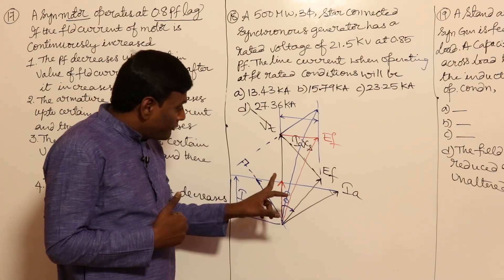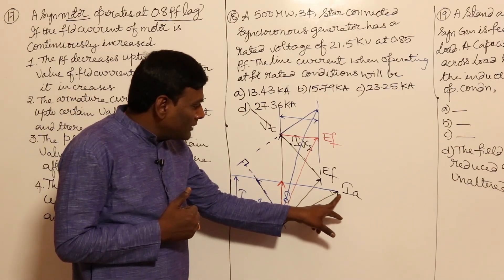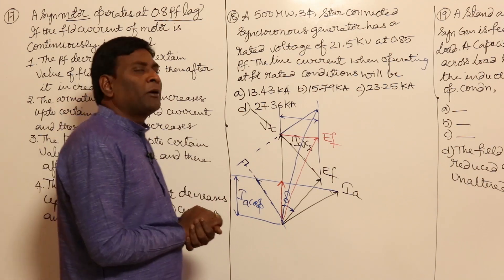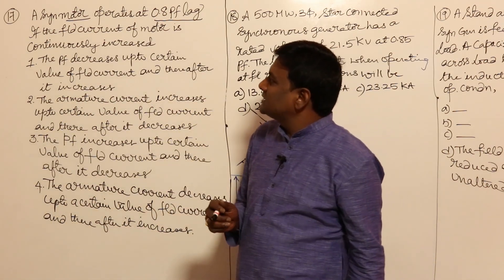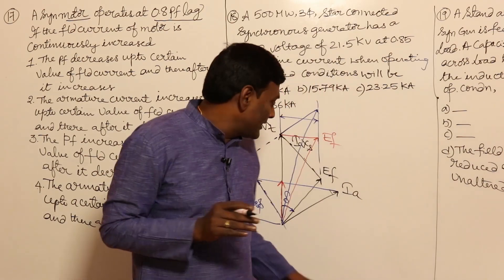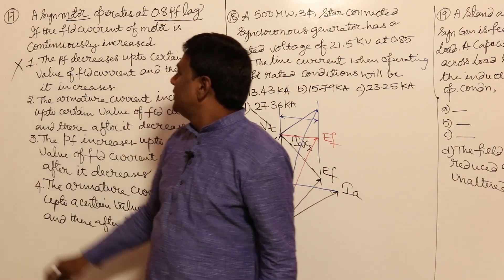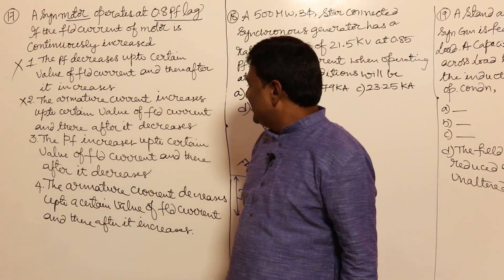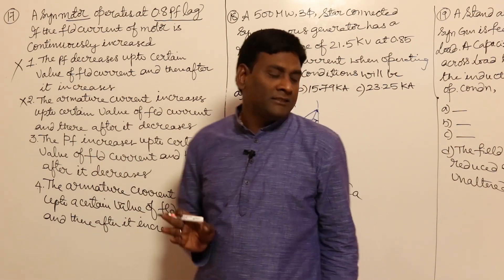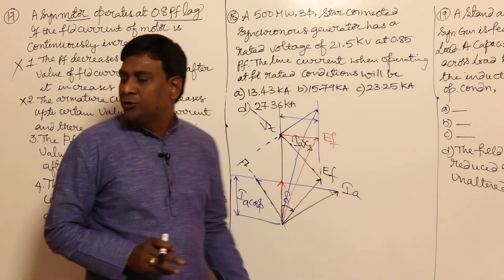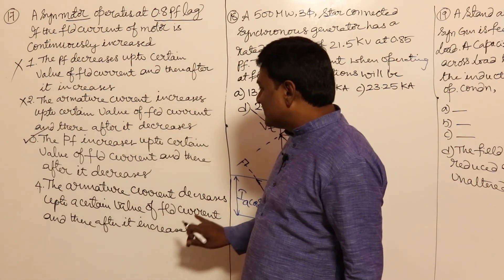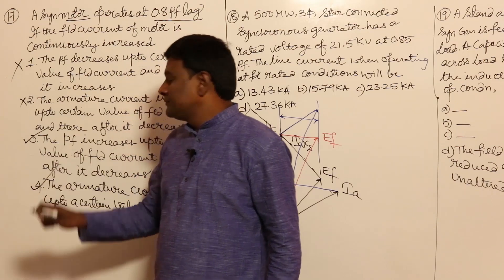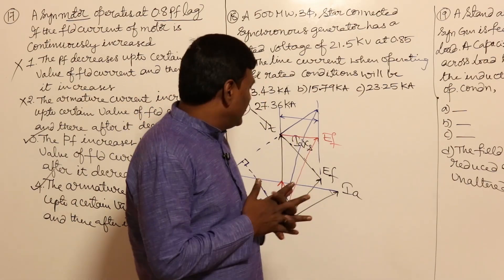From the phasor: from black to red, the length of armature current reduces; from red to blue, the length of armature current increases. Regarding power factor: it was lagging, then improves to unity, then becomes leading — so power factor first increases then decreases. Therefore, statements 3 and 4 are correct: power factor increases up to unity and then decreases, and armature current decreases up to a certain field current value and then increases.